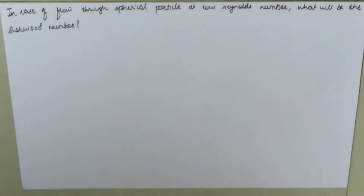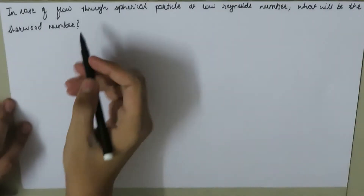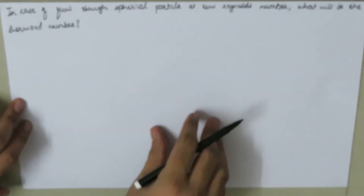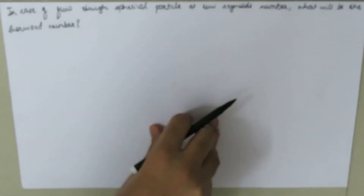Today we are going to see what will be the Sherwood number for the low Reynolds number — specifically, in the case of flow through a spherical particle at low Reynolds number, what will be the Sherwood number.